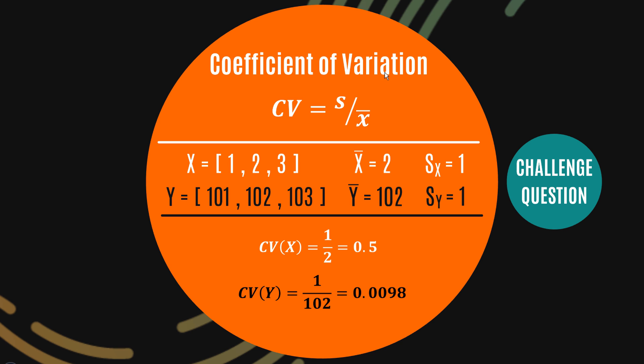So we need some other measure of variation that'll take the scale of the data set into account, and that's where the coefficient of variation comes into it. So the coefficient of variation for X will be s over x-bar, and so we're going to get 0.5. And the coefficient of variation for Y is going to be 1 on 102.